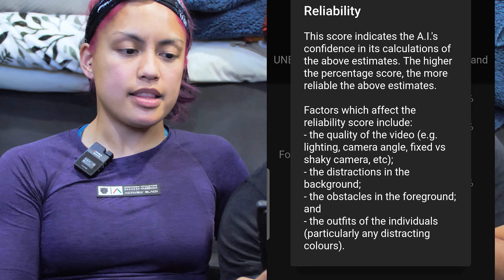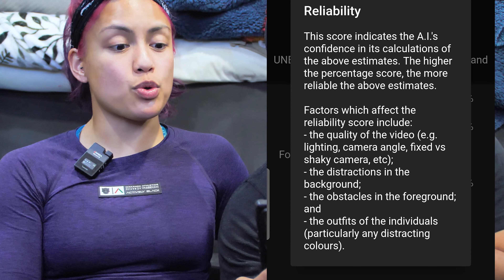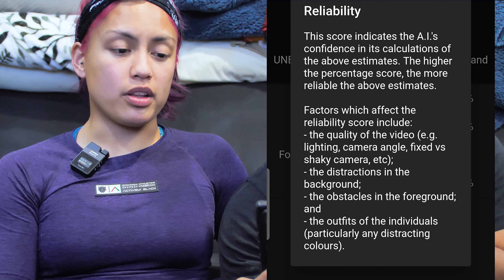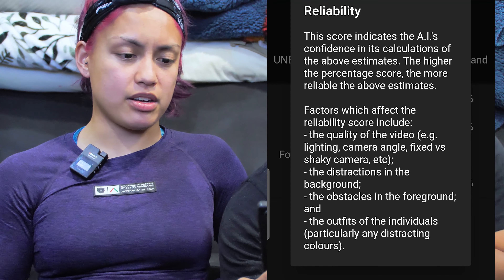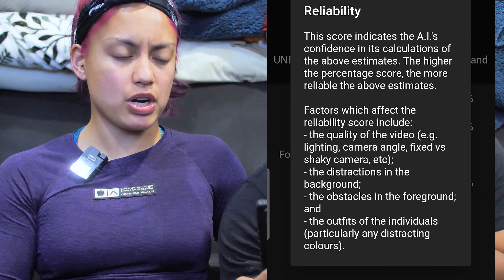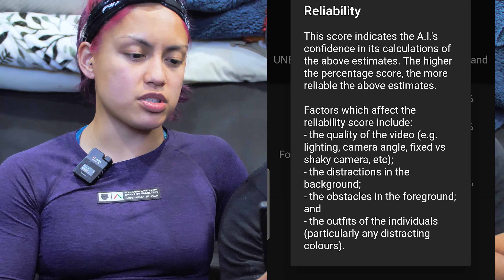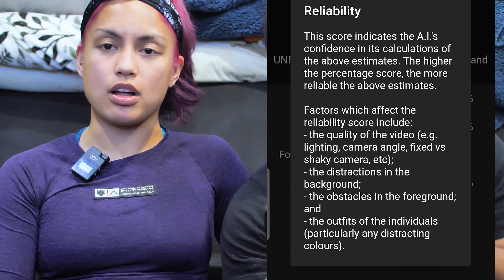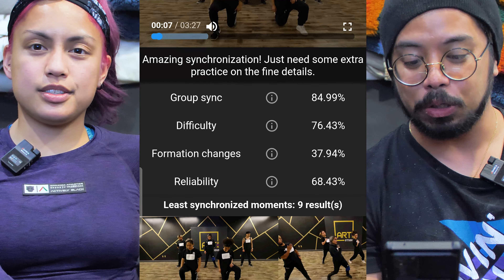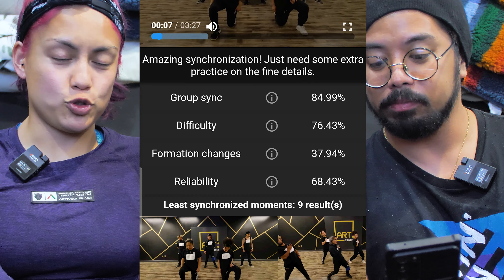Reliability indicates the AI's confidence in its calculations. The higher the percentage, the more reliable the estimates. Factors affecting reliability include video quality, camera angles, fixed versus shaky camera, background distractions, foreground obstacles, and the outfits of the individuals — particularly distracting colors. Now we have the actual results: group sync is 84.99%, rounded up to 85.